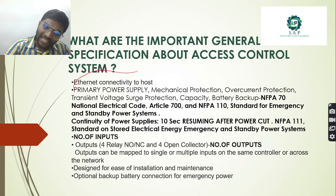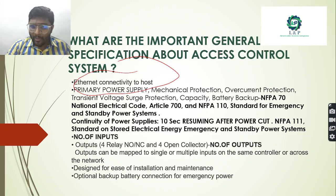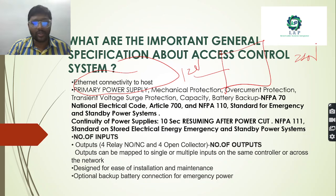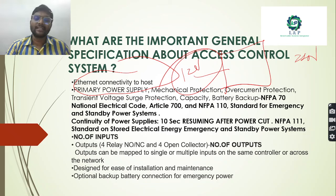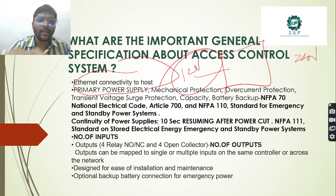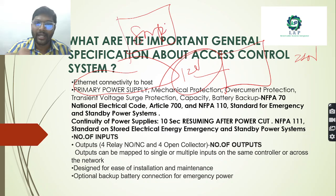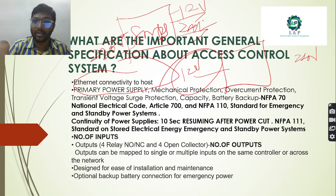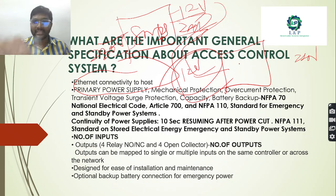Important specifications of an access control system include Ethernet connectivity. The primary power supply for the access controller can be either 12 volt or 24 volt. Most commonly, 12 volt is used. We use an SMPS connected to 230 volt single-phase supply, converting it to 12 volt DC output which is then connected to the card readers.